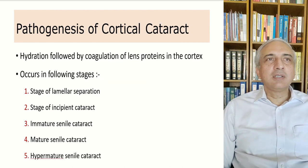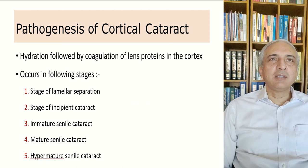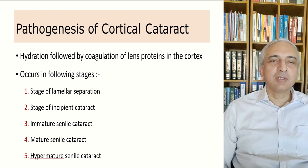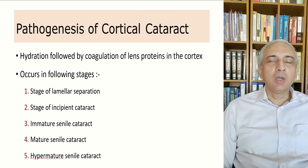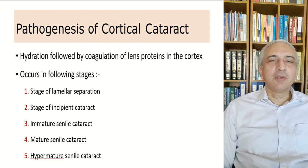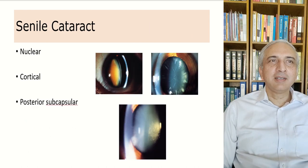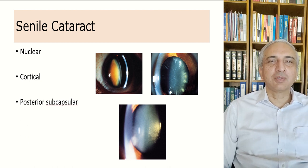The pathogenesis of these cataracts involves hydration — fluid develops in the lens fibers causing lens fiber separations — followed by coagulation of lens proteins in the cortex. This occurs in the following stages: first the stage of lamellar separation, then incipient cataract, immature senile cataract, mature senile cataract, and hypermature senile cataract.